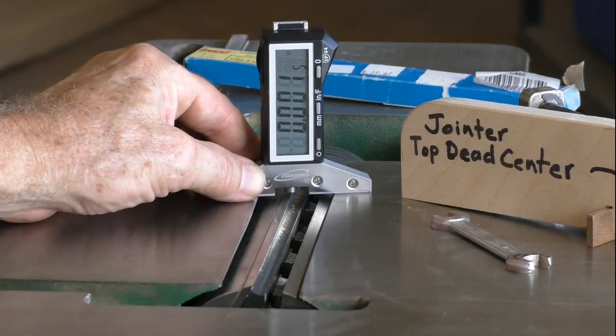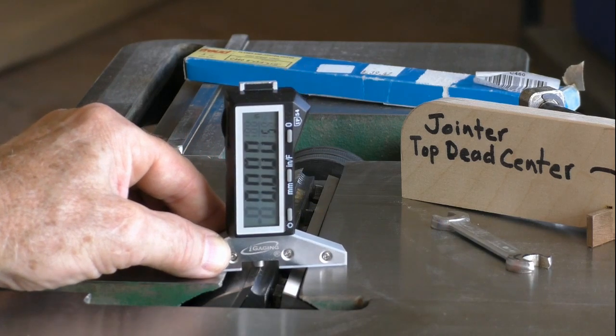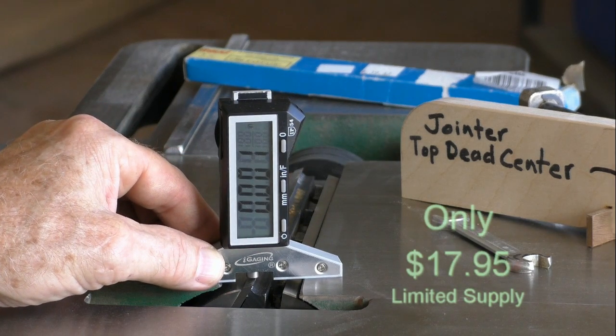Now use PlaneCheck to read the height across the length of the knife. Readings should be between 0 and 2 thousandths of an inch. Adjust the other joiner knives similarly.